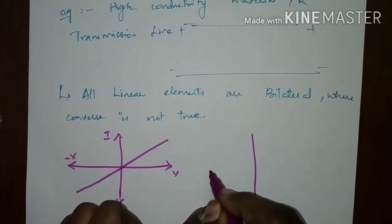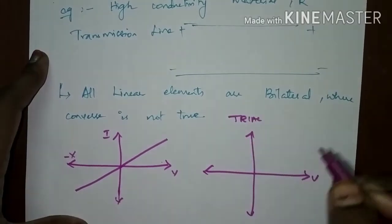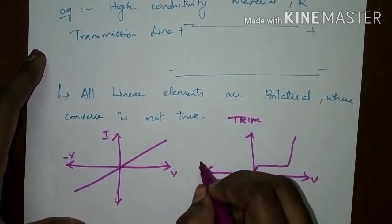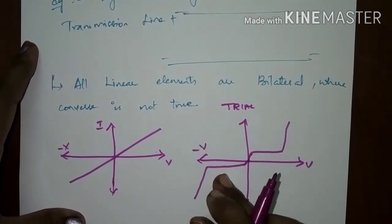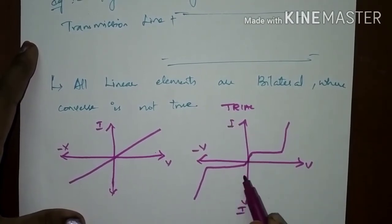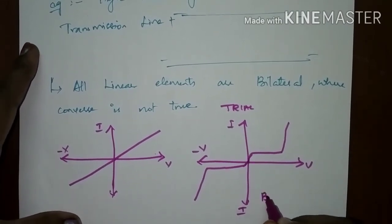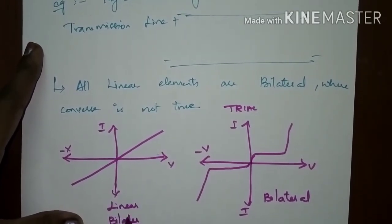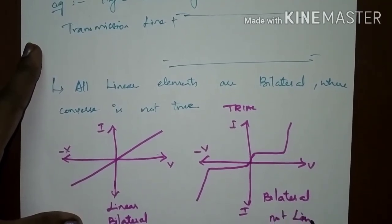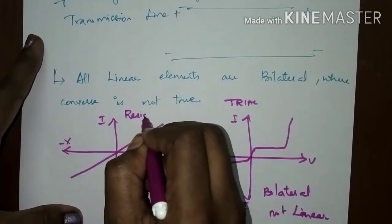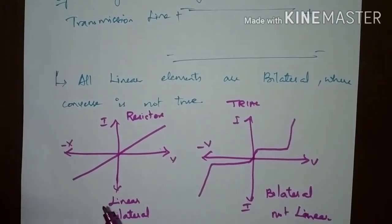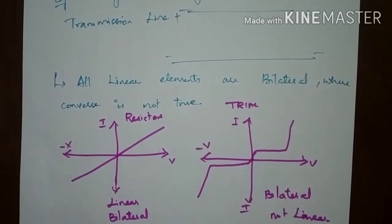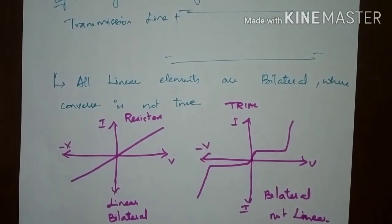For a certain bilateral element, consider a TRIAC. If you reverse the voltage, its characteristics are symmetrical about the origin — the voltage-current relationship does not vary and is similar to the positive case. So TRIAC is a bilateral element, but it is not a linear element, whereas a resistor is both a bilateral and a linear element. All linear elements are bilateral, but a bilateral element cannot always be linear — the TRIAC is a bilateral but non-linear example.